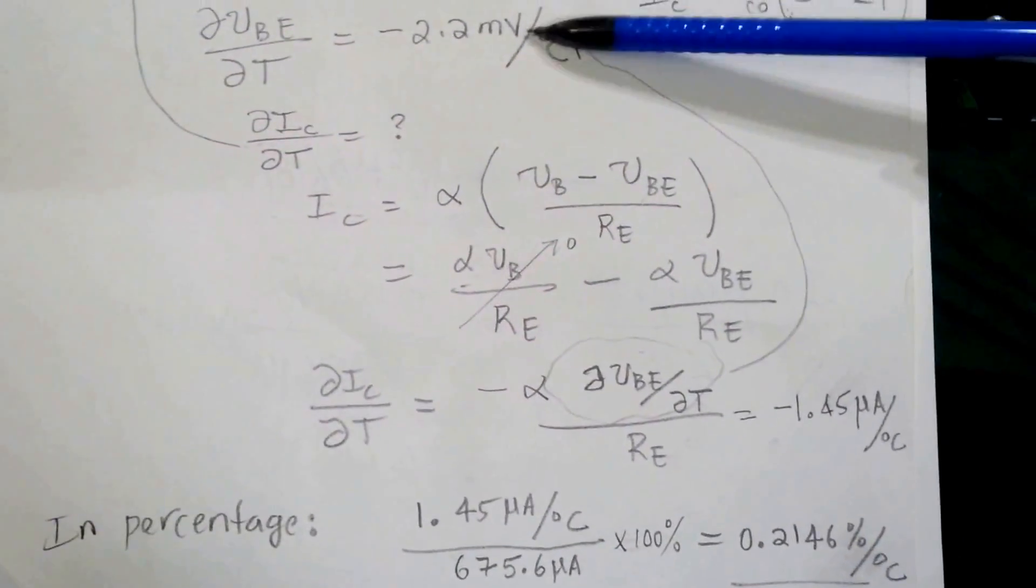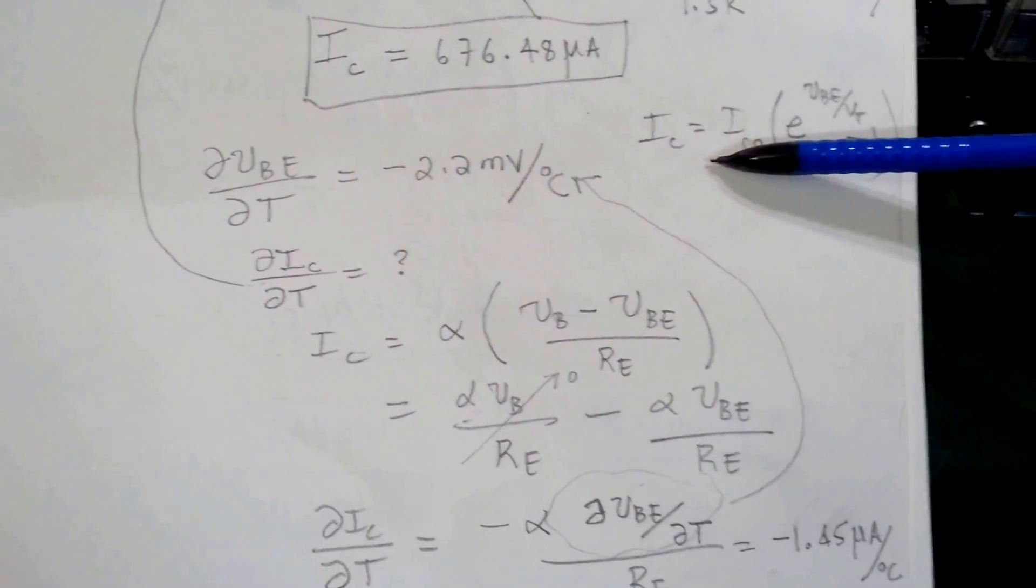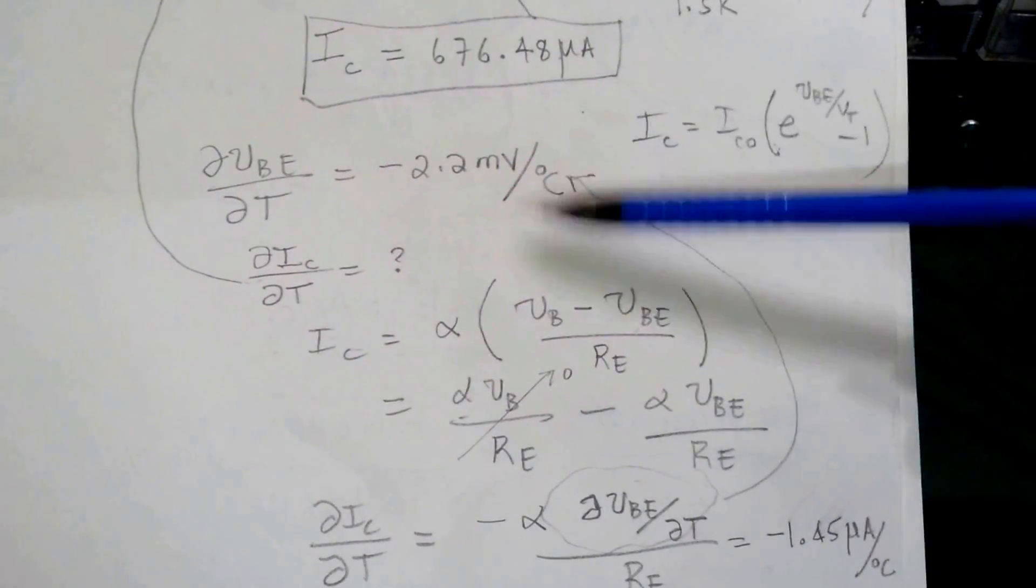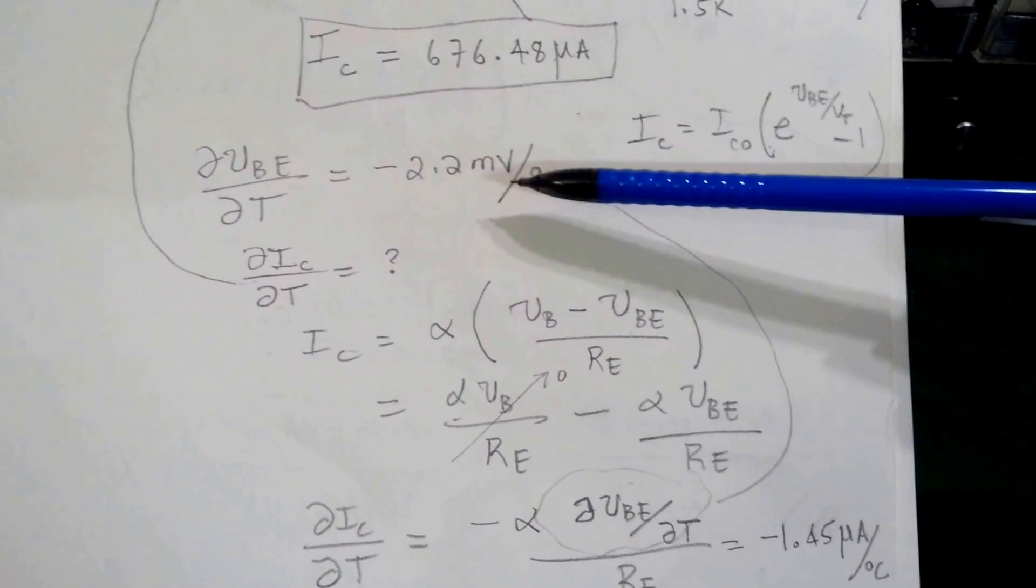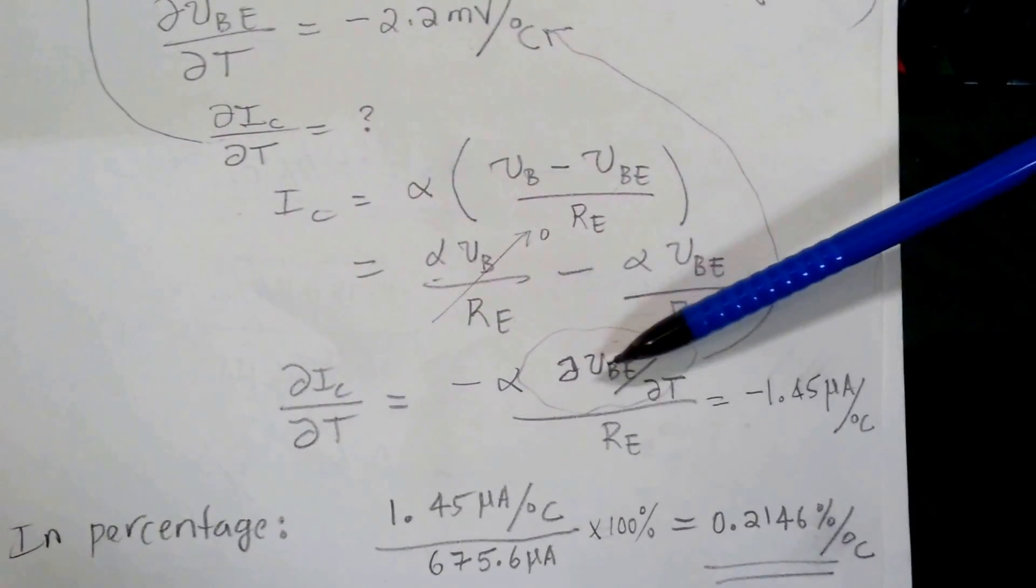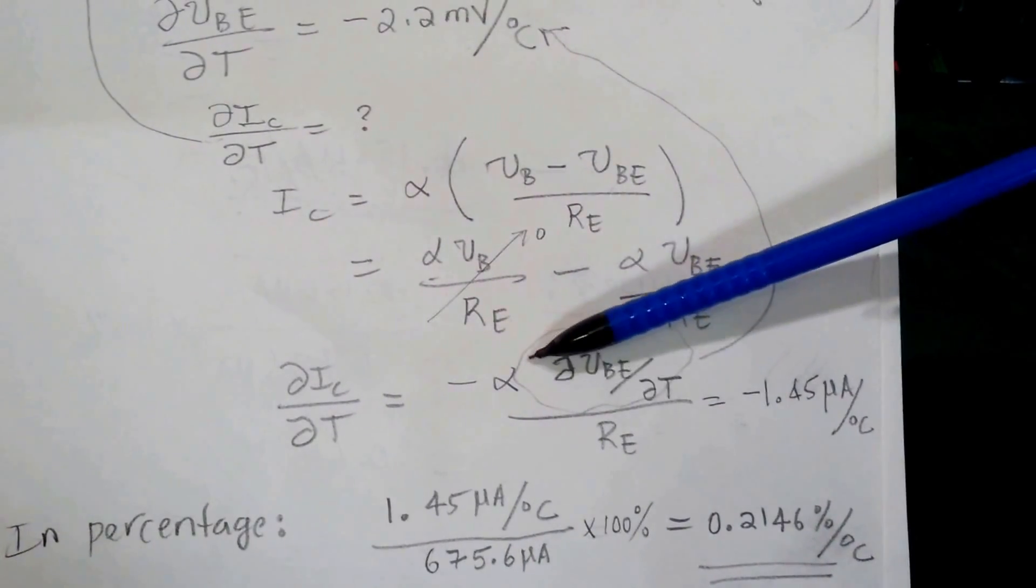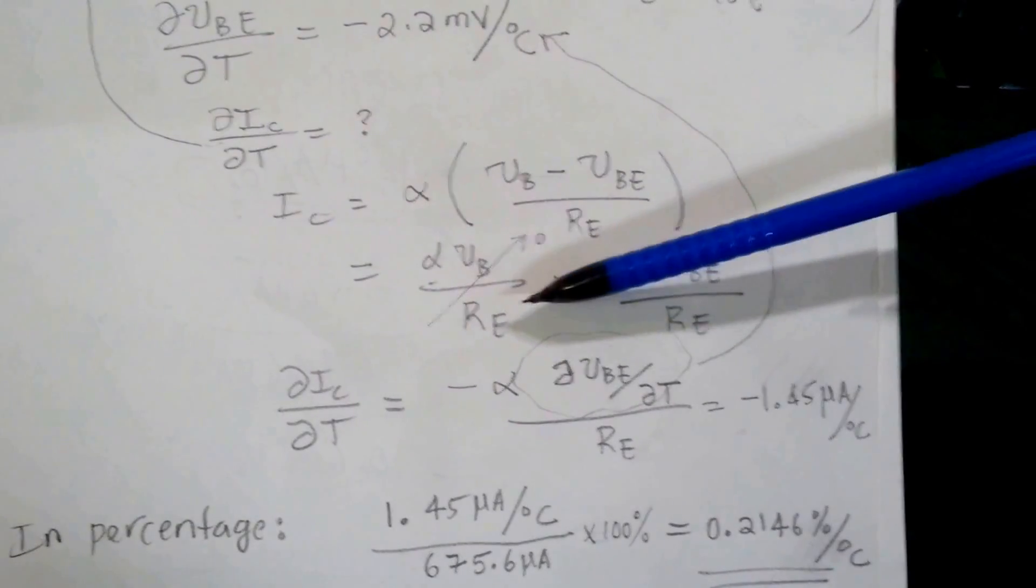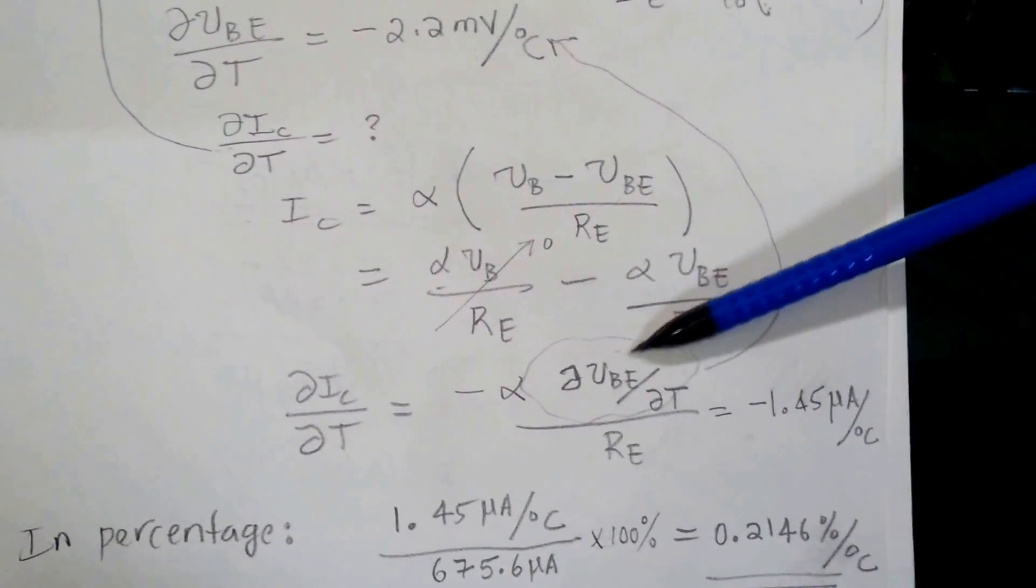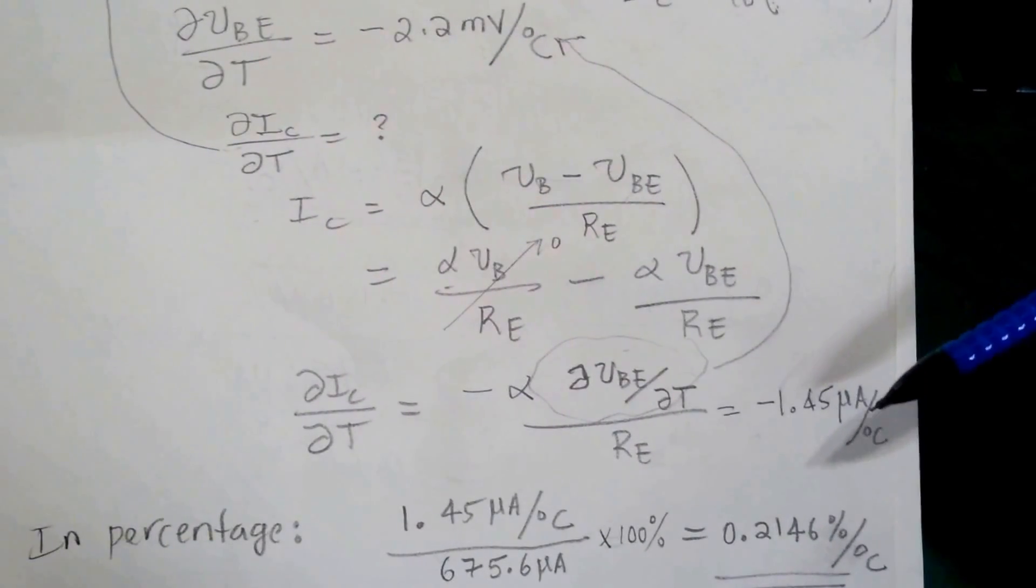Actually, to get this part, if you want to dig into it, it comes from the Ebers-Moll equation where it relates the collector current with respect to the base emitter voltage of the transistor. So this temperature coefficient of VBE, the base emitter voltage, comes from there. Since we have derived this expression, if we plug those values in, alpha is beta divided by beta plus 1, and beta in this case is 100 because we guaranteed it's not going to change, and RE equals 1.5K. So we plug these values in, we get the actual temperature coefficient of the collector current is minus 1.45 microamps per degree C.